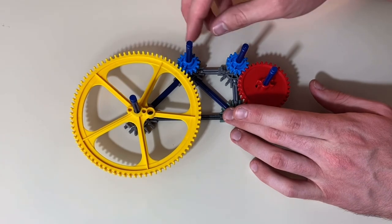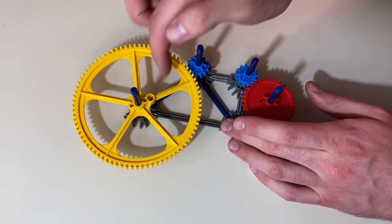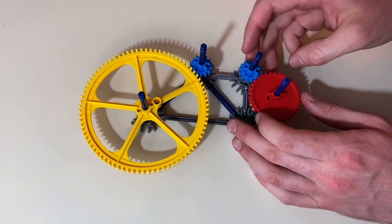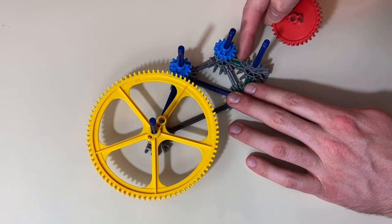The large yellow gear and the small blue gear mesh together at a distance of one blue rod, and the red gear and the small blue gear mesh together at a distance of a green rod.